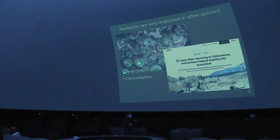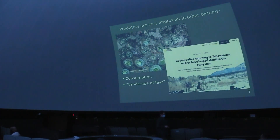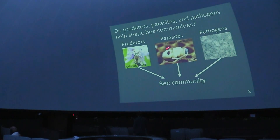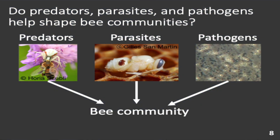Predators seem to affect their prey and the ecosystem through two methods. One is consumption — this tends to be what we think about most. The other is the 'landscape of fear': predators create fear in the landscape, their prey act differently, and that leads to ecological outcomes. Going back to bees now — this idea applies to parasites and pathogens too, but I did most of my work on predators. The question became: how do these groups influence bee communities?